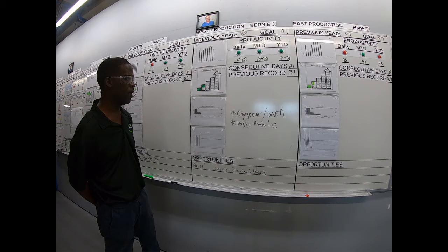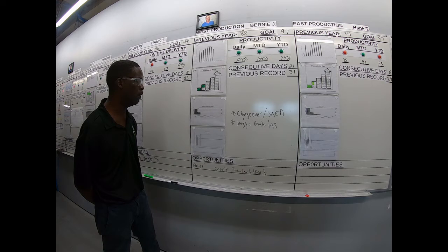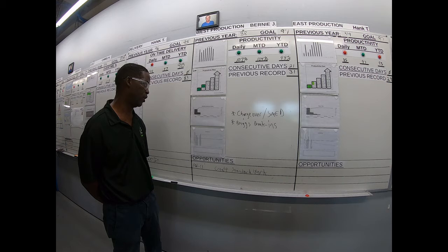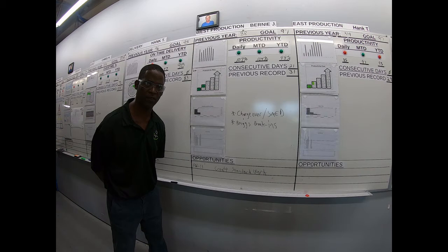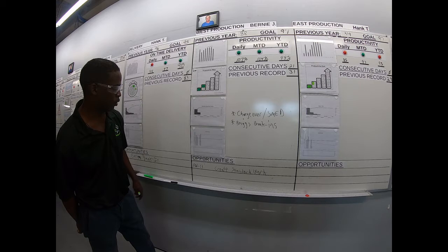You get down here, we have a Pareto. This is where we're doing our investigations and corrective actions. So we're Paretoing right now, trying to figure out what is the monthly big hitter. On here you can't necessarily see it, but some of the things listed are tooling, no material, equipment, things of that nature. We'll Pareto that out and then we'll attack the big hitter.